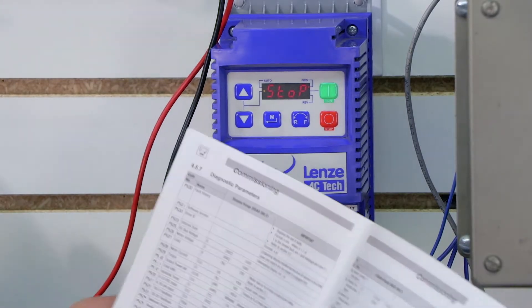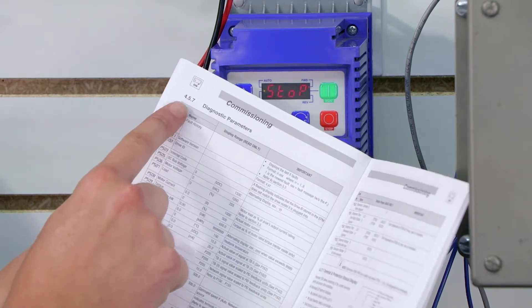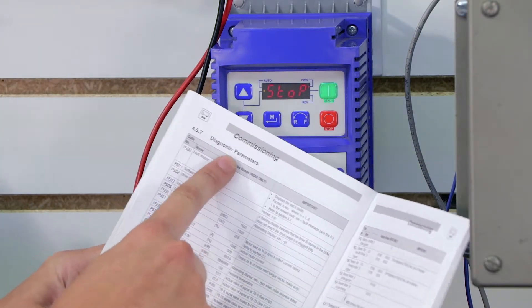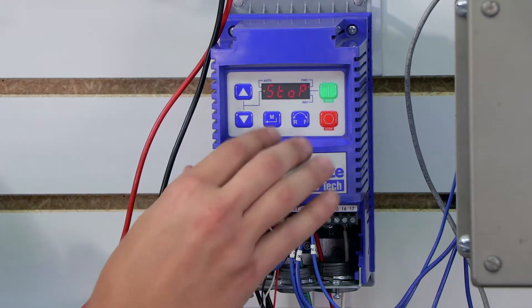If you want to follow along in the manual, which we always encourage you to do, it's actually in section 4.5.7 for diagnostic parameters and it's basically parameter group 500.